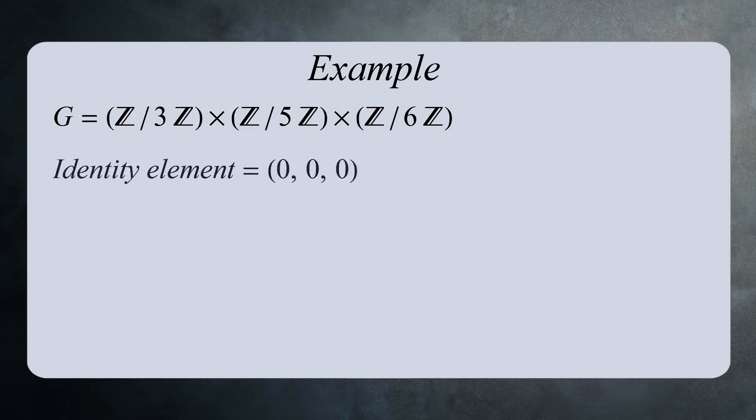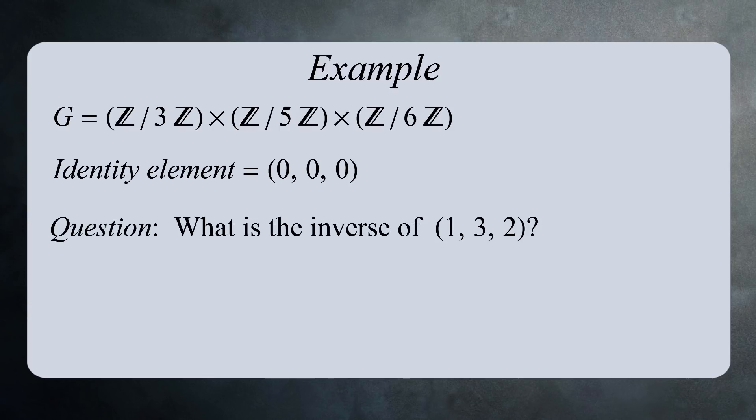The identity element in this group is (0, 0, 0). Here's a question for you: what's the inverse of (1, 3, 2) in this group?